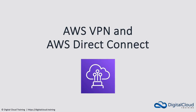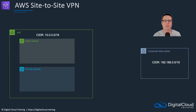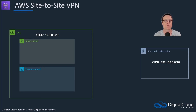In this lesson, I'm going to cover virtual private networks and AWS Direct Connect. We often want to connect our corporate data centers or offices with the AWS cloud, and there are a couple of ways to do this. One is a site-to-site VPN, a virtual private network, and the other is Direct Connect. We're going to look at both in this lesson and see what the differences are.